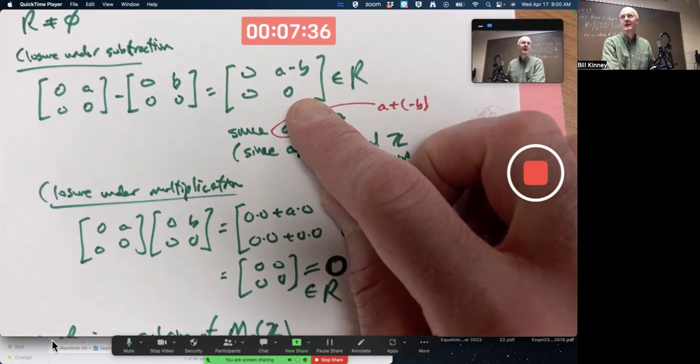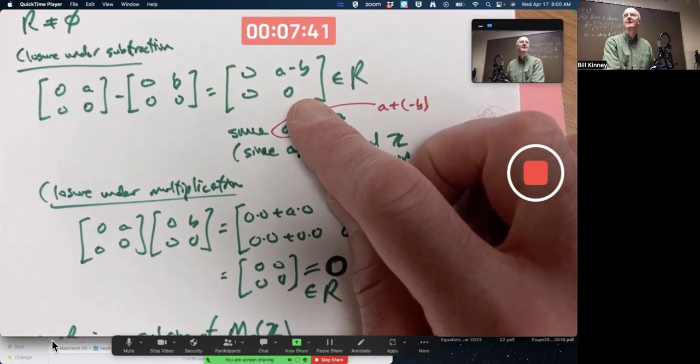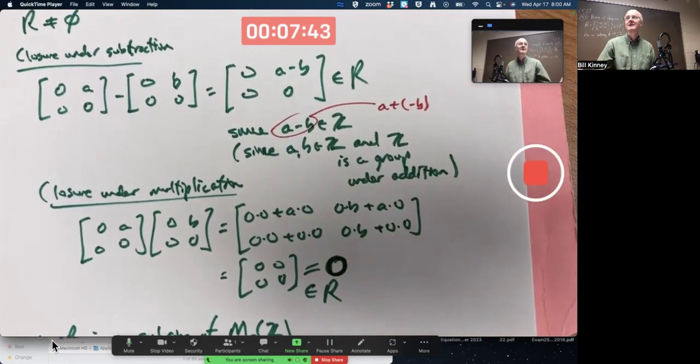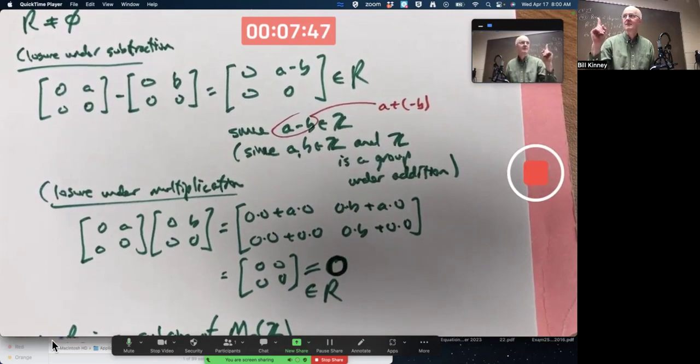And, effectively, you could argue if that had happened, that would have been a proof that it's not a subring, though it's also good enough to prove it's not a subring by taking just one example with particular numbers. That would have been fine as well.